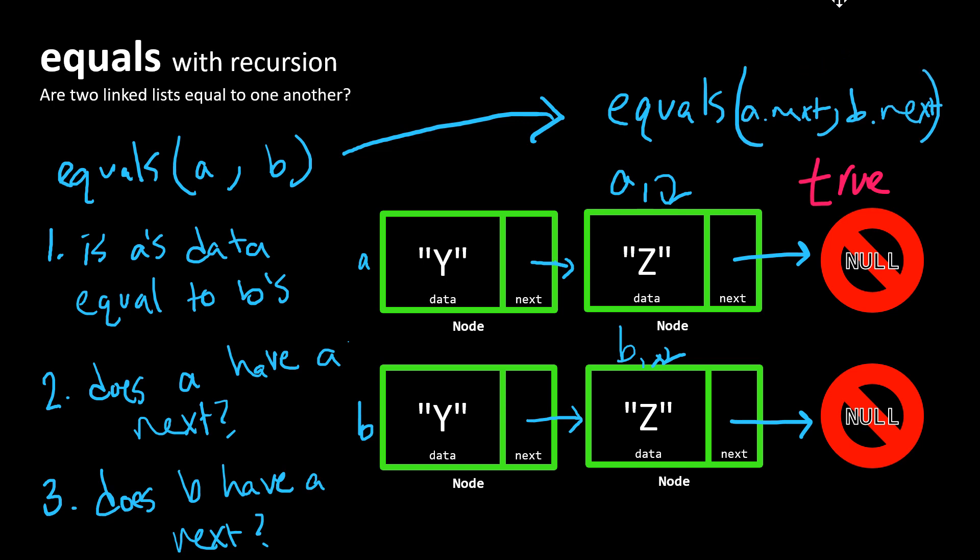the base case is here when those A and B are both referring to null as the next nodes but have equal content. That's when we're going to get a truthful return value out of this function.